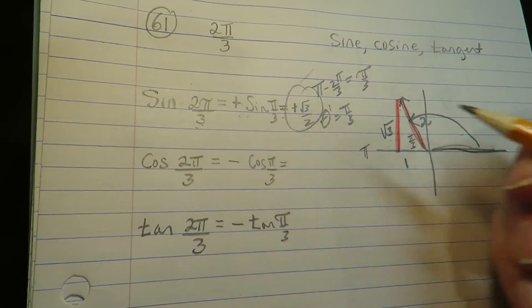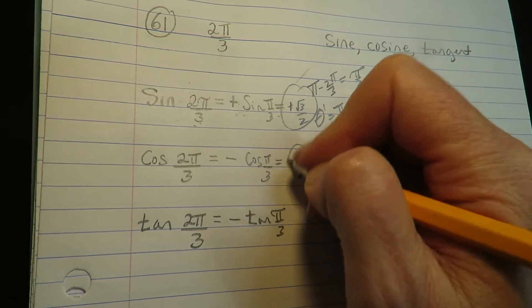Cosine is adjacent over hypotenuse. So that's negative 1/2.